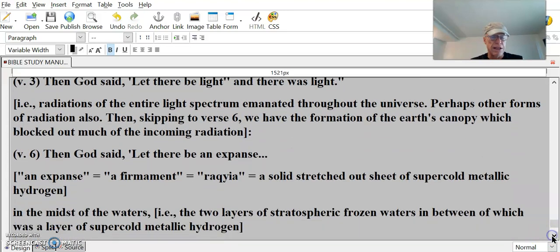Then, God said, let there be an expanse, an expanse, a firmament. The Hebrew transliteration of the word rakia, which defined as a solid, stretched-out sheet of super-cold metallic hydrogen. Because you have water, a firmament. What do you got in order? H, hydrogen, 2O, oxygen. Now, what's going to be super-stretched and metallic? The hydrogen. Right? Not the oxygen. The hydrogen, because at super-cold temperatures, it has properties of a metal.